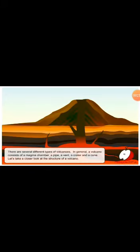The volcano consists of a magma chamber, a pipe, a vent, a crater, and a cone. Let's take a closer look at the structure of a volcano.